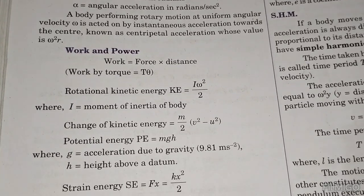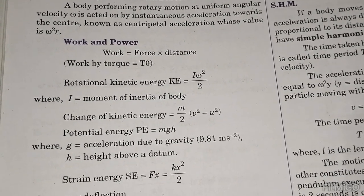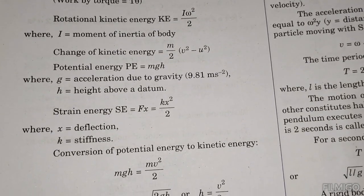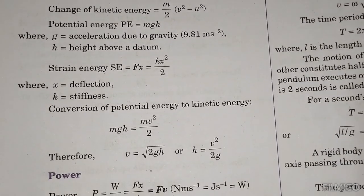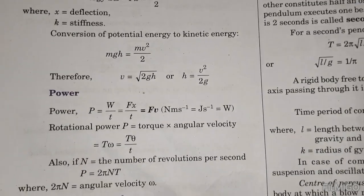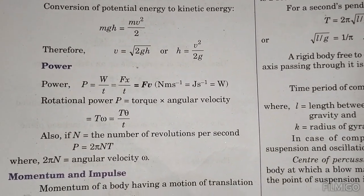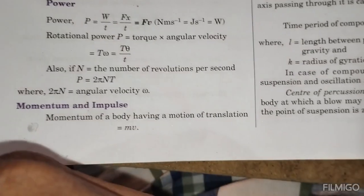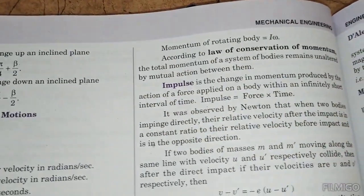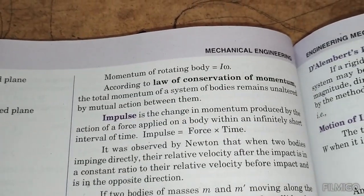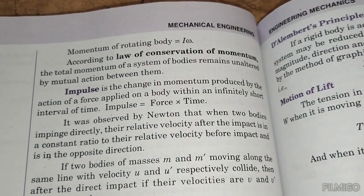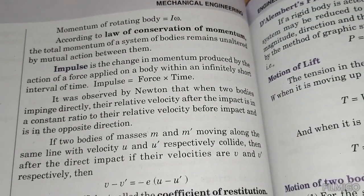Kinetic energy KE equals half m v squared, or half I omega squared for rotation. Change in kinetic energy equals m divided by 2 times v squared minus u squared. Potential energy PE equals mgh. Strain energy equals k x squared divided by 2. By energy conservation: v equals square root of 2gh. Impulse equals force times time. The law of conservation of momentum states that the total momentum of a system remains constant.